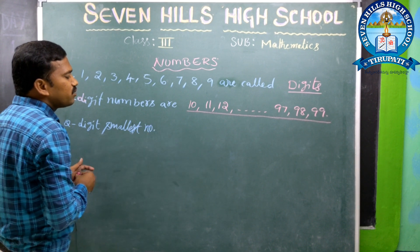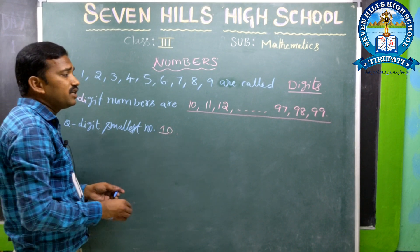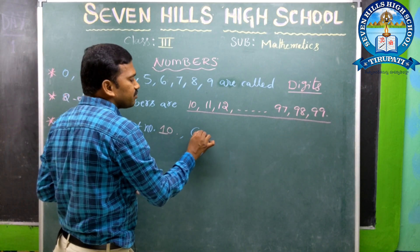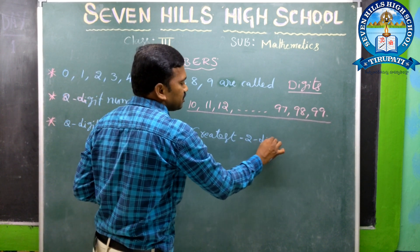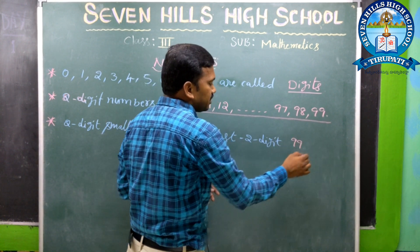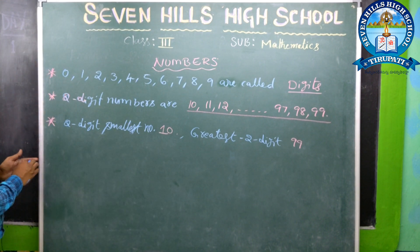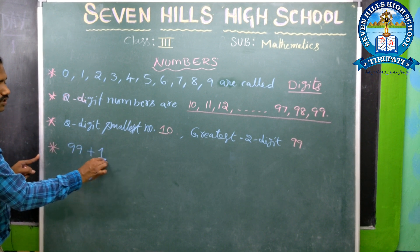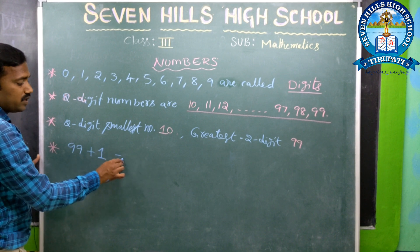The 2-digit smallest number is 10. The 2-digit smallest number is 10, and the 2-digit greatest number is 99. By adding 1 to the greatest 2-digit number, we get...